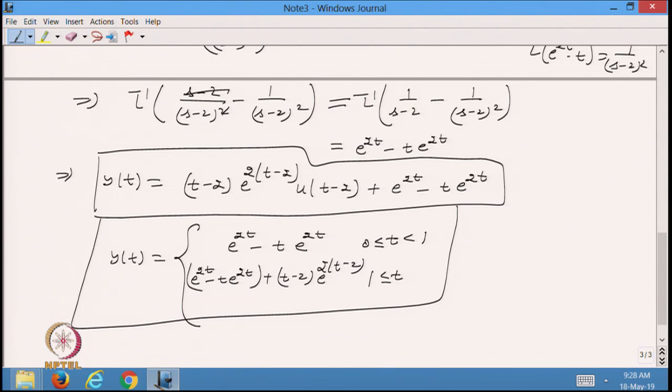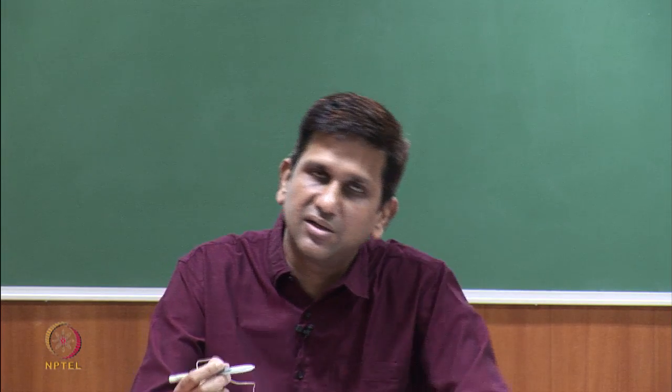This is the Green's function, or I can say the solution of the given differential equation. From here you can see that using the Laplace transformation we are very easily able to find the solution whenever the Dirac delta function is given on the right hand side. That is another application of the Laplace transformation.